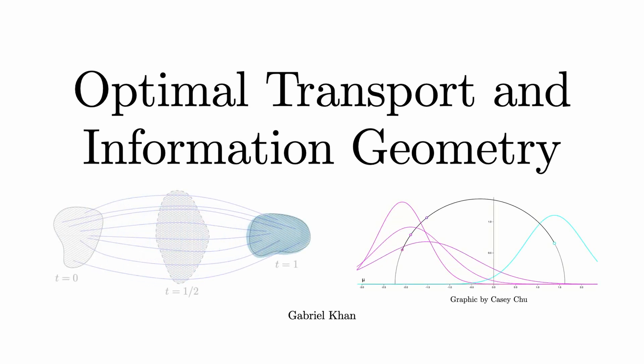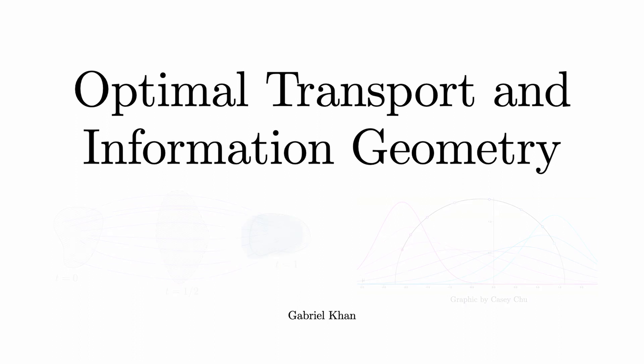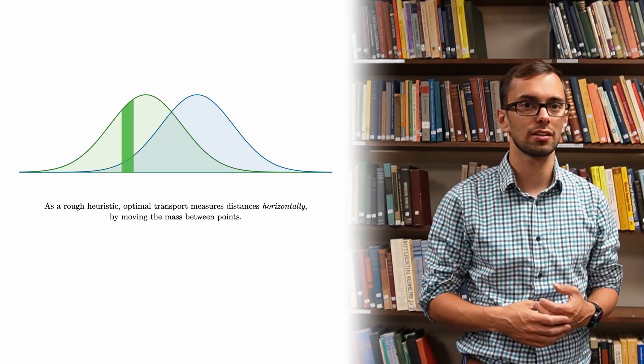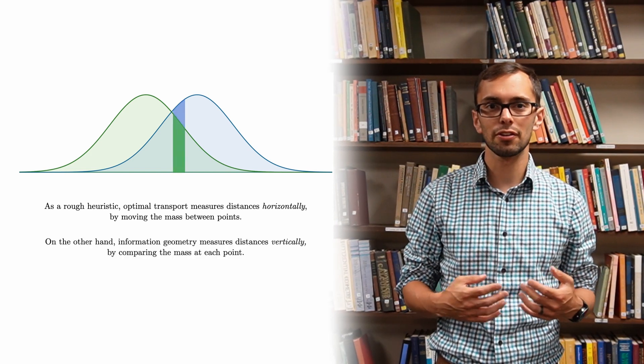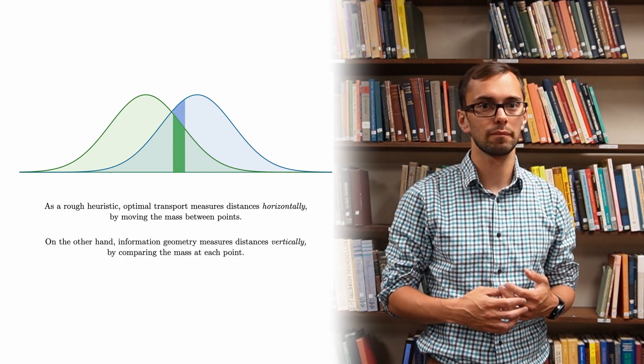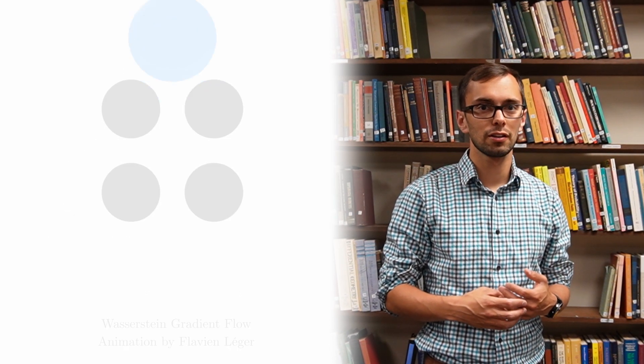Optimal transport and information geometry provide two frameworks for understanding the distances between probability measures. Although these are separate theories which were developed independently, it turns out that there are many connections between them. Furthermore, they both have applications in data science and machine learning.